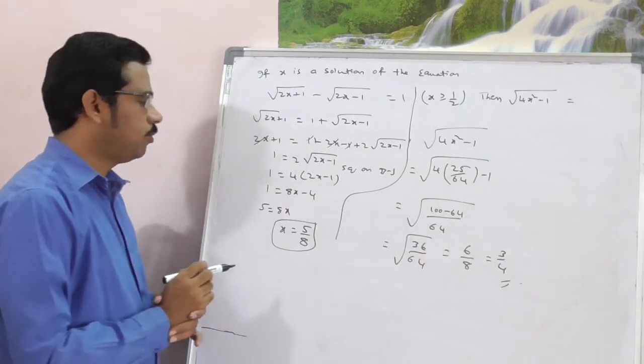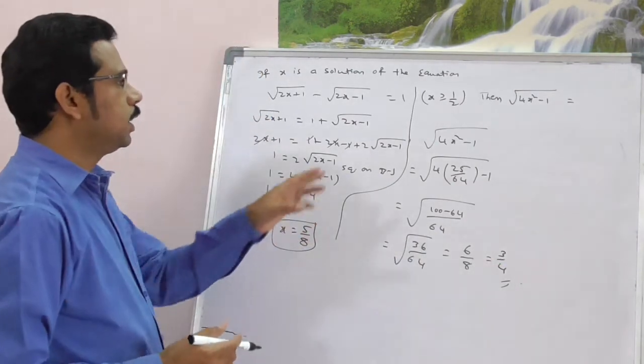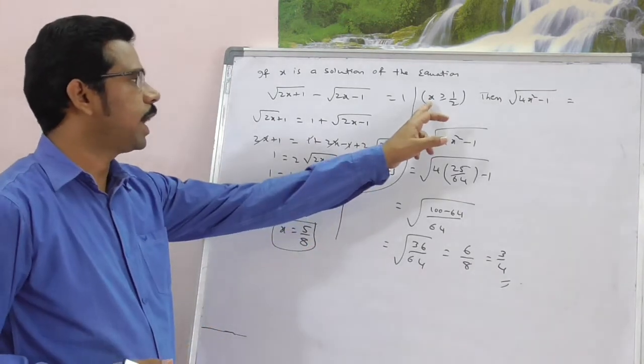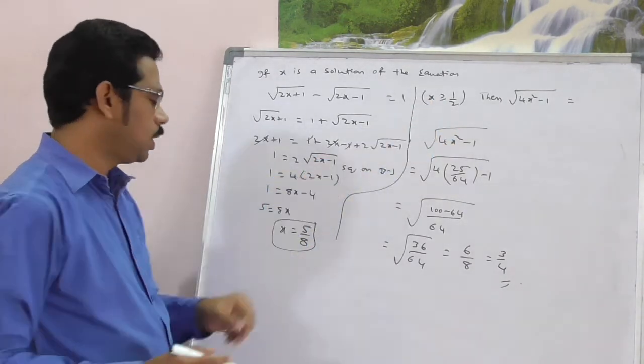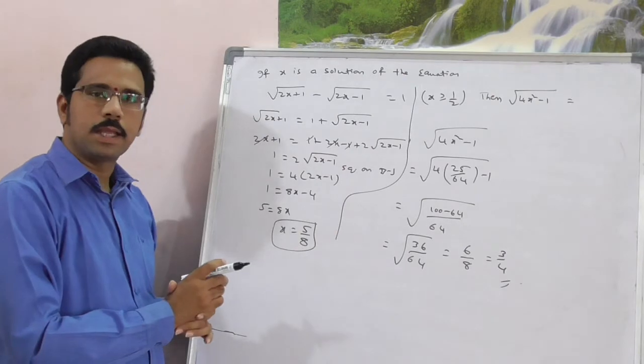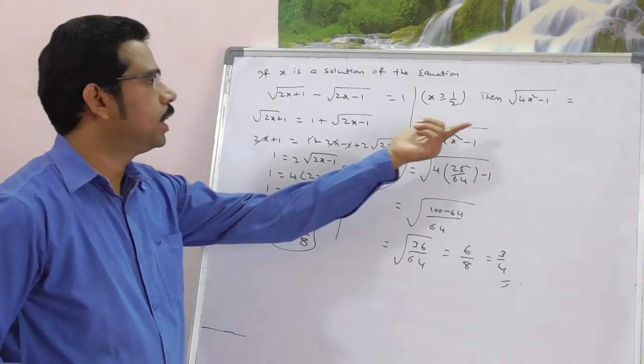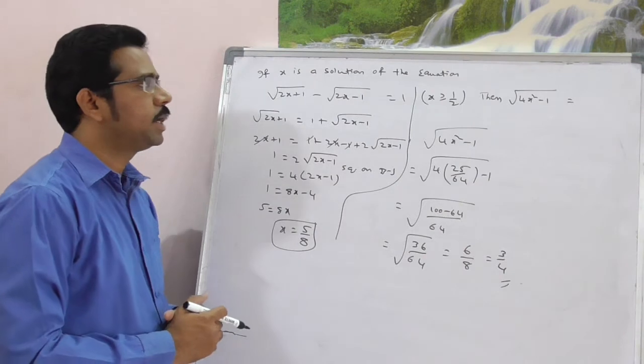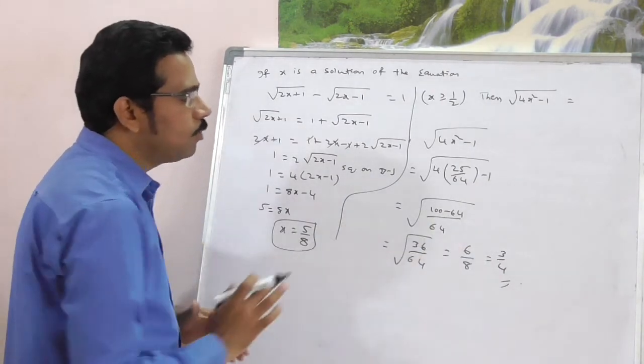Okay? So, 3 by 4 is your final answer. Your condition also satisfied. Observe here. X greater than or equal to 1 by 2. X equal to 5 by 8 is clearly greater than 1 by 2. Therefore, your final answer for square root of 4x square minus 1 should be what? 3 by 4.